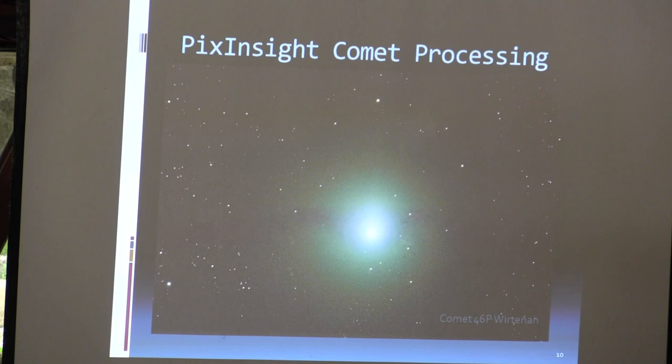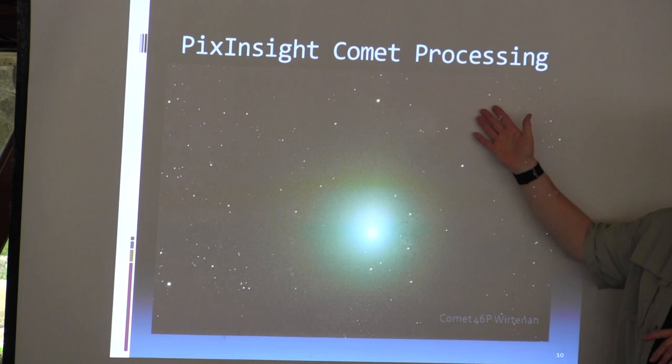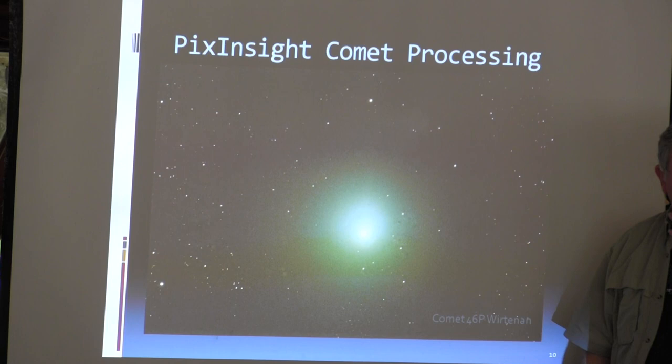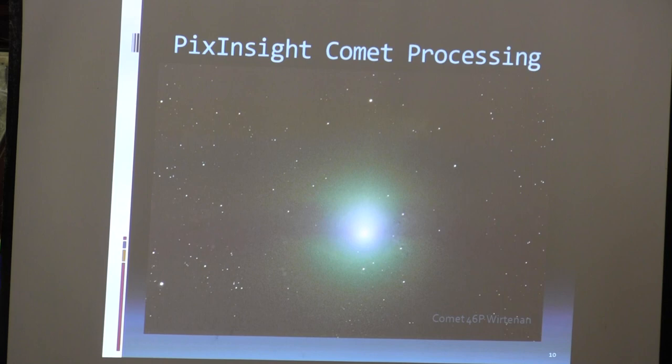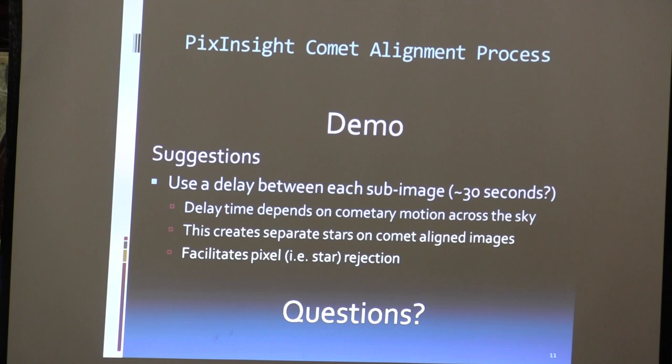Once I've finished all that processing — this is comet Wirtanen and it didn't have much of a tail — you can see all the stars are pretty tight and the comet is all in one place. There's some artifacts in here from where I tried to clean up the comet master with cloning. I didn't do a good job of it, so there's a little bit of stuff left there, but that's for another topic.